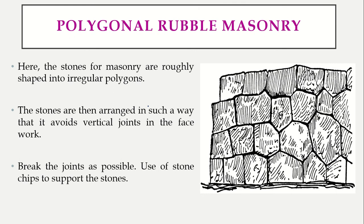Next is polygonal rubble masonry. The stones used are irregular polygons — polygons having more than three sides. These irregular polygonal-shaped stones are arranged together in such a way that there are no voids or gaps, and we ensure there are no continuous vertical joints. Vertical joints are avoided because seepage would continue through the entire wall and cause collapse, so we break the joints.